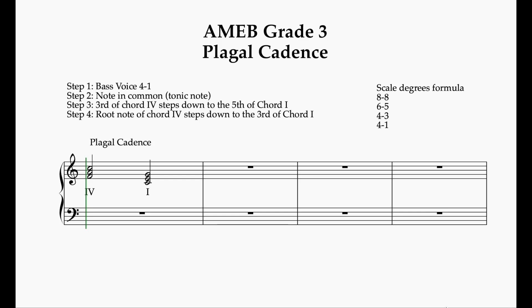It's time for more theory and for third grade today we're going to do the plagal cadence. So what is the plagal cadence? That's the cadence where you're going from the subdominant triad — chord 4 — to chord 1. Previously we have done the perfect cadence where you're going from the dominant chord to chord 1, which makes the music sound finished because in the perfect cadence you have the leading note rising to the tonic.